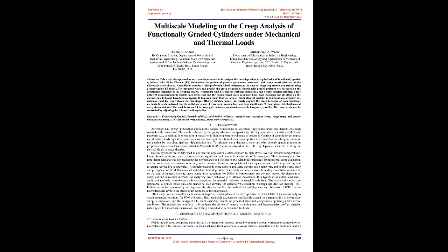Three different micromechanical models have been used and the homogenized creep responses have been evaluated and their effect on macroscopic behavior compared. It has been found that for large 3D finite element models the computational expenses are enormous, and the study shows that the simple 2D axisymmetric model can closely capture the creep behavior of such multiscale methods. It has been found that the radial variations of constituent volume fractions have significant effects on stress distributions and creep strain histories. The models are useful to investigate material combinations and heterogeneity profiles. The creep strain can be controlled by adjusting the volume fraction profiles.